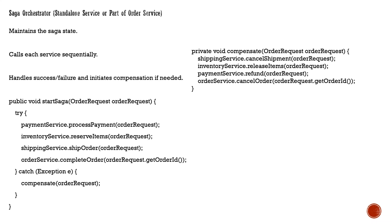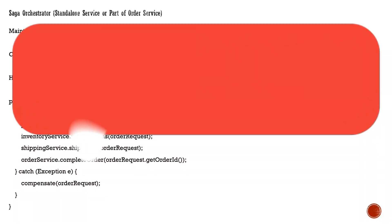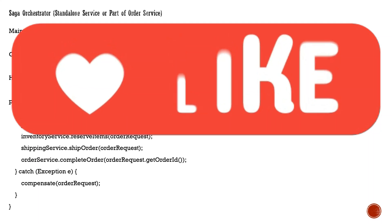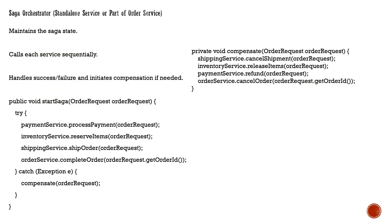If any step fails or there is any issue, in the catch block a compensating order is triggered. In the compensating order, the shipping service cancels the shipment, the inventory service releases the item, and the debited payment is refunded. Ultimately the order is canceled. This is how the central coordinator handles failures.